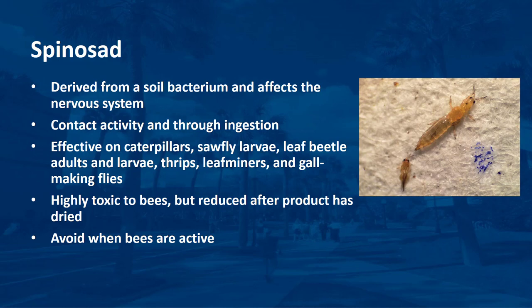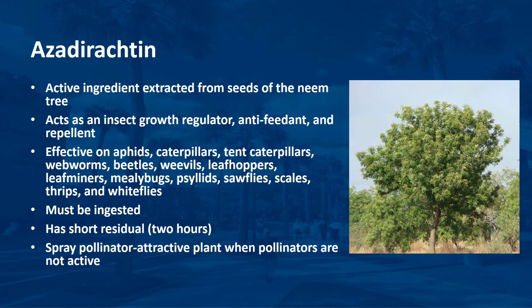Azadirachtin is the active ingredient extracted from seeds of the tropical neem tree. Bioinsecticides with azadirachtin act as an insect growth regulator in addition to being an antifeedant and repellent to insects. It is effective at controlling insect immature stages and is broadly labeled for aphids and caterpillars such as budworms, tent caterpillars, and webworms; beetles such as Japanese beetles, weevils, leafhoppers, leafminers, mealybugs, psyllids, sawflies, scales, thrips, and whiteflies. Azadirachtin must be ingested to be toxic and, when applied as a foliar spray, has short residual activity, making it unlikely bees and other pollinators will be affected, as it is no longer toxic to bees after about 2 hours.